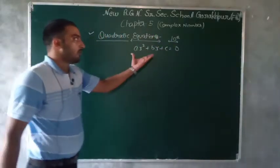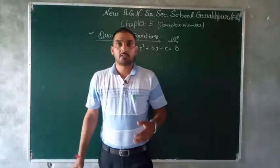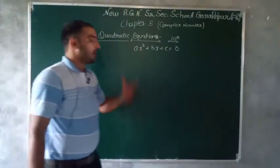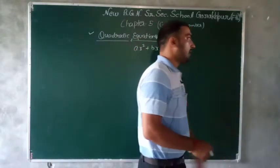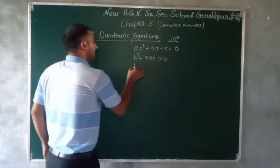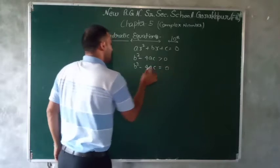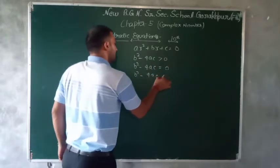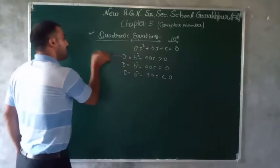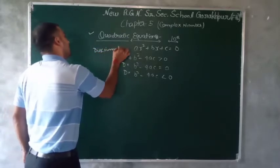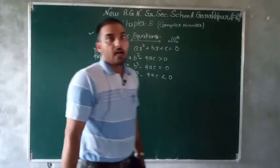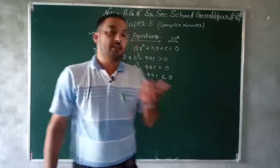What is a quadratic equation? It is an equation whose degree is 2, meaning the highest power of the variable is 2. To solve a quadratic equation, you remember 3 things: D = b² - 4ac greater than 0, D equal to 0, and D less than 0 — where D stands for discriminant.